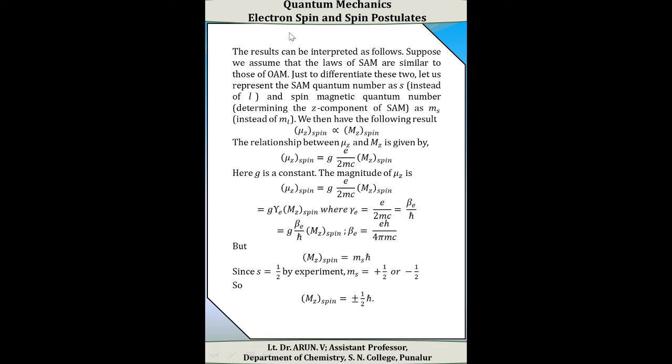The relationship between mu_z and m_z is given by: mu_z(spin) = g × (e / 2mc), where g is a constant. That is, mu_z(spin) = g × gamma_e × m_z(spin), where gamma_e = e/(2mc) × beta_e/h-cross, the gyromagnetic ratio. Also, mu_z(spin) = g × beta_e / h-cross × m_z(spin), where beta_e = e×h / (4π mc).